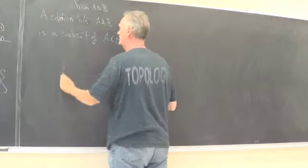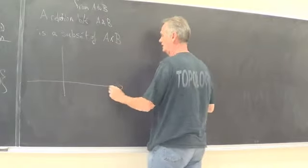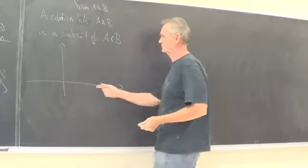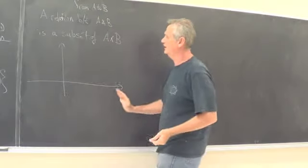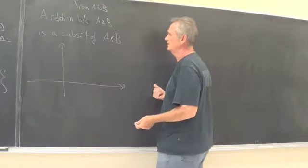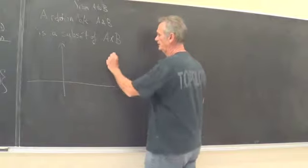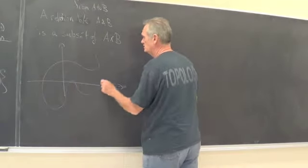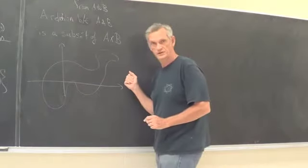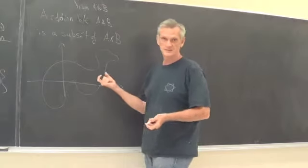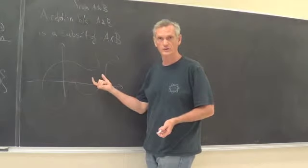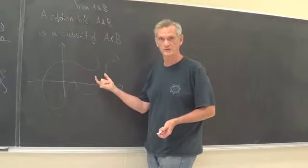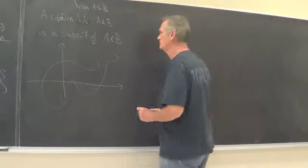And schematically, the way we think about relations, for example, suppose A is the real line and B is the real line, then A cross B is the Cartesian plane, and then a relation is just some subset of the Cartesian plane. It doesn't seem like a very powerful notion, but the reason that we have to introduce the notion is because we want to define what a function is.